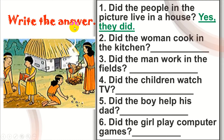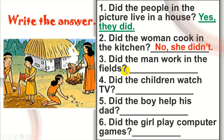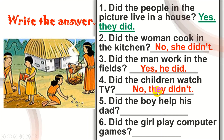Let's move on. This part: write the answer. You can look at the screen or your student book. Look at the pictures and answer the questions. Number 1: Did the people in the picture live in the house? Yes, they did. Number 2: Did the woman cook in the kitchen? No, she didn't. Number 3: Did the man work in the fields? Yes, he did. Number 4: Did the children watch TV? No, they didn't.